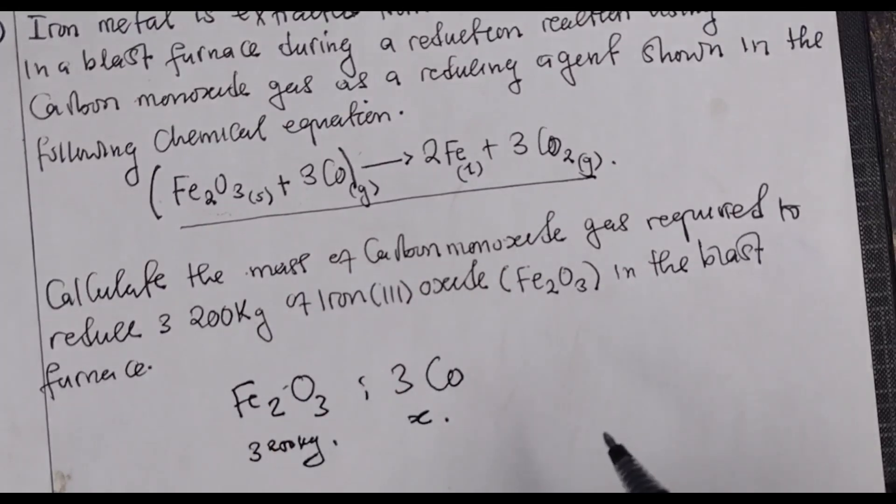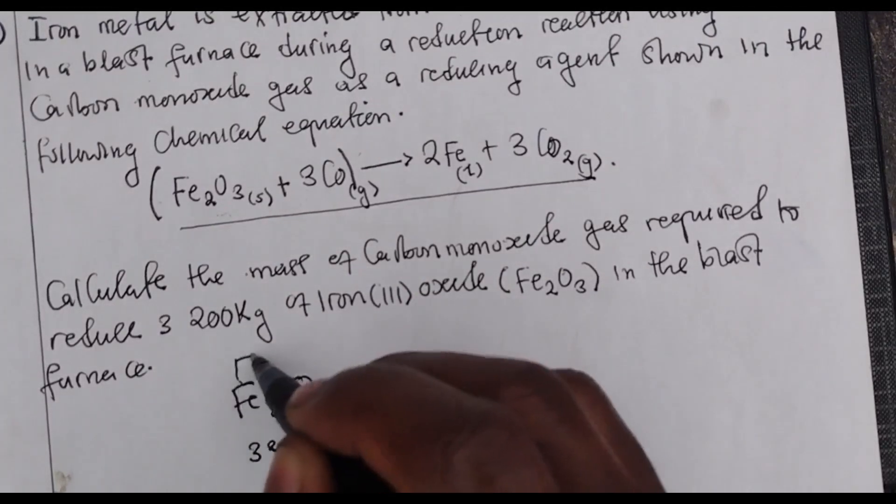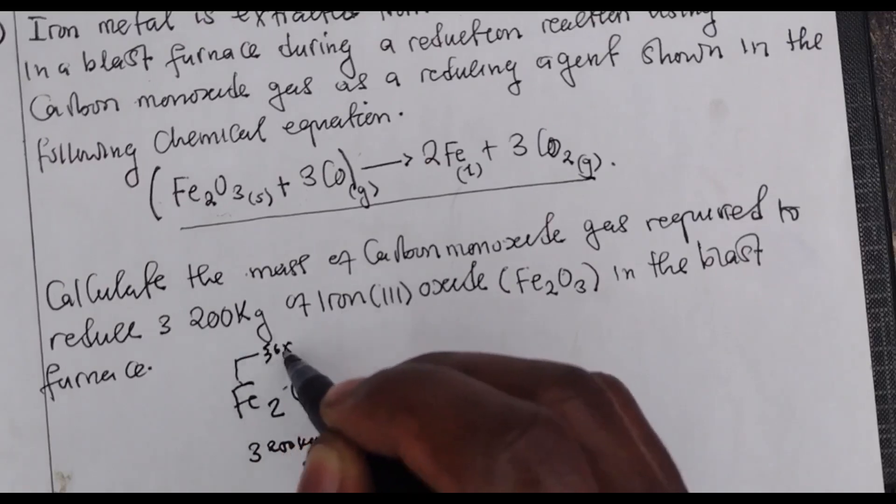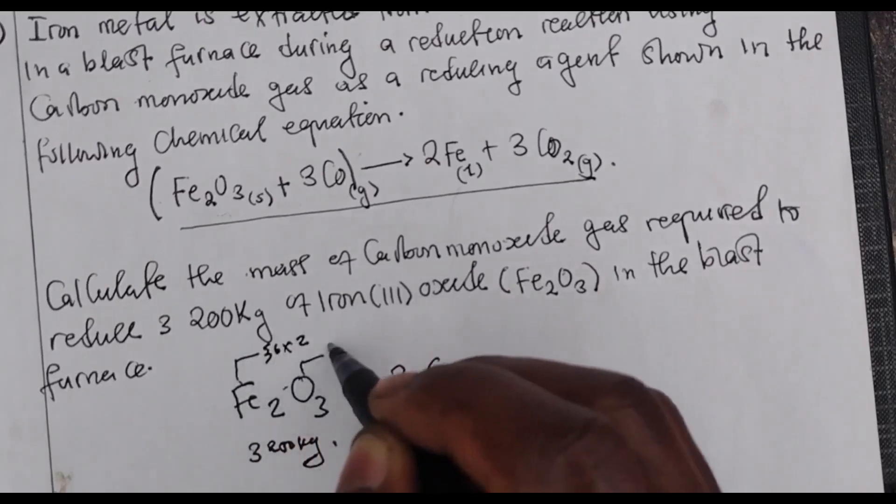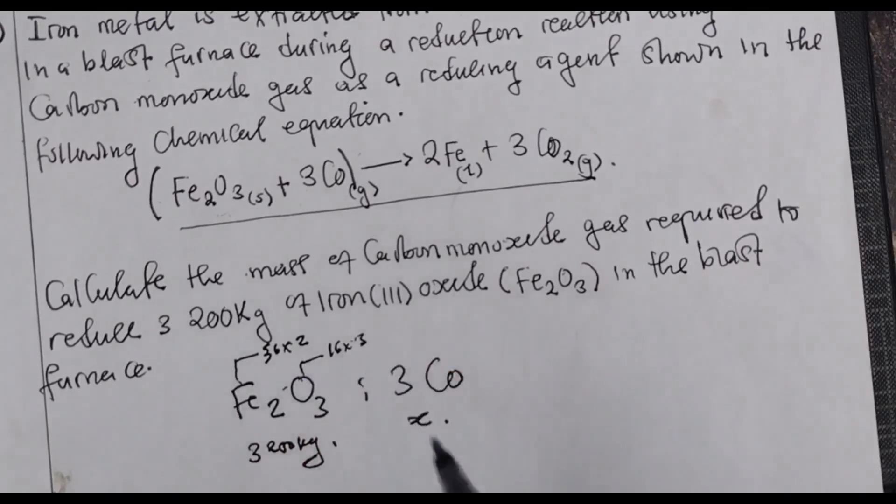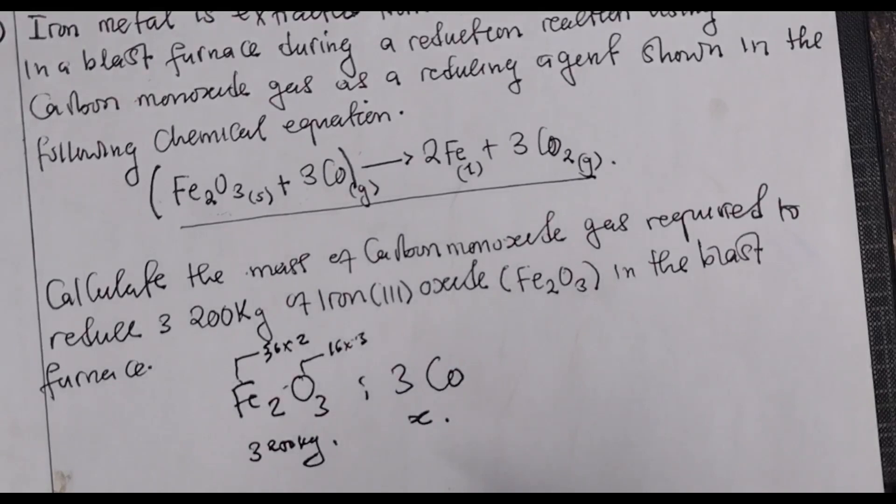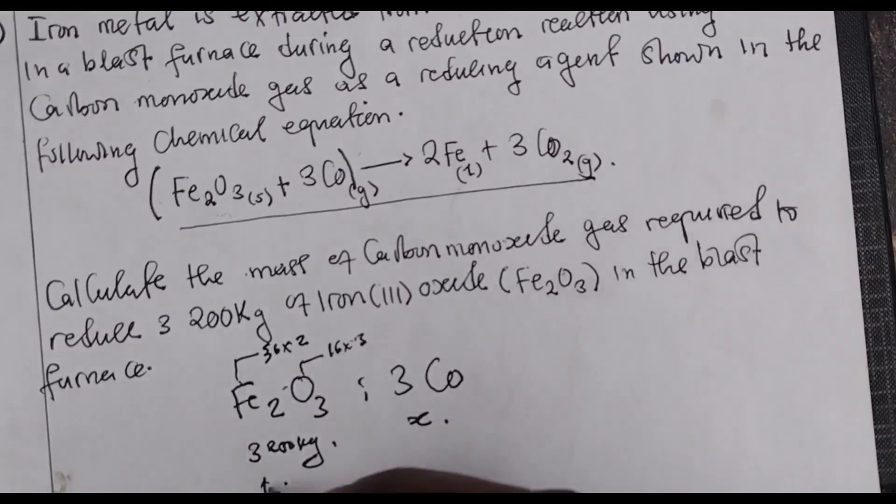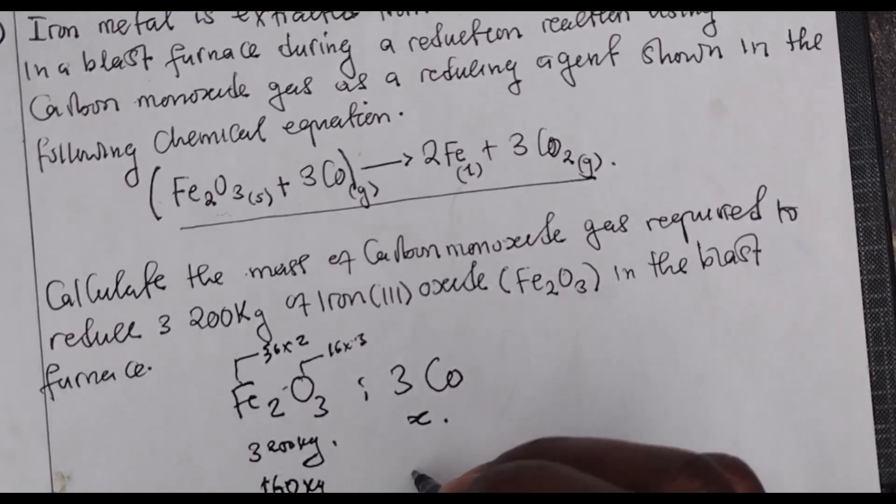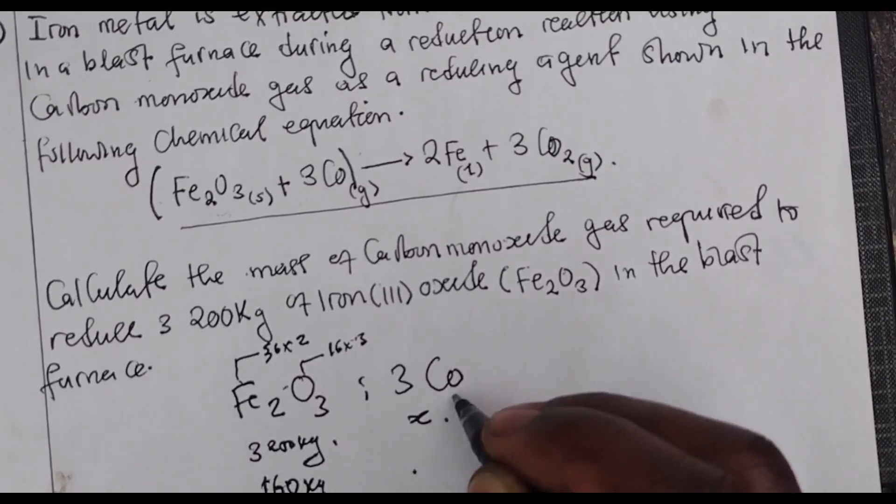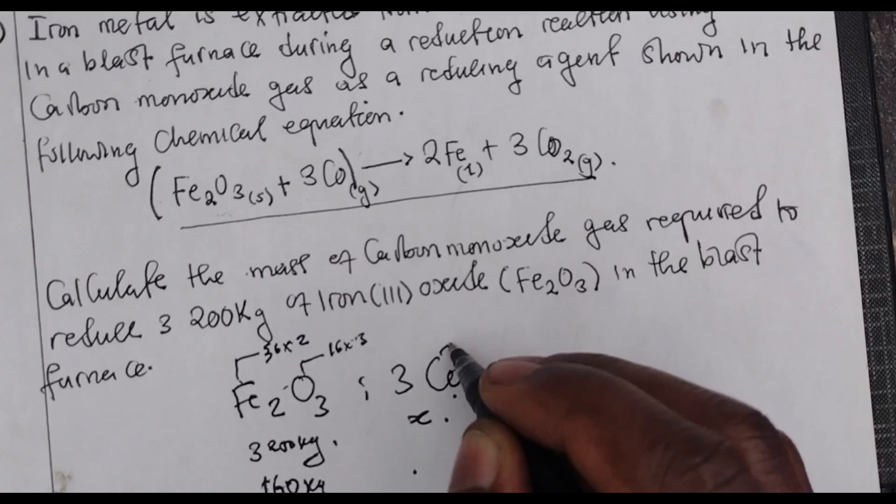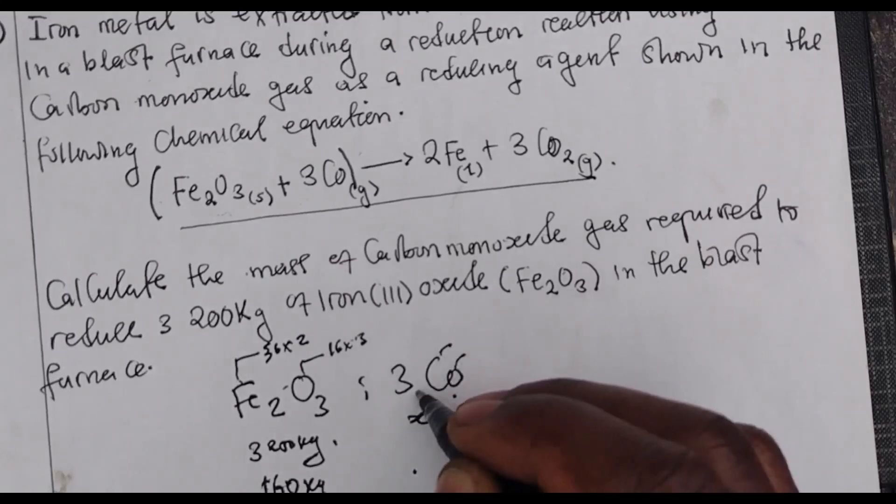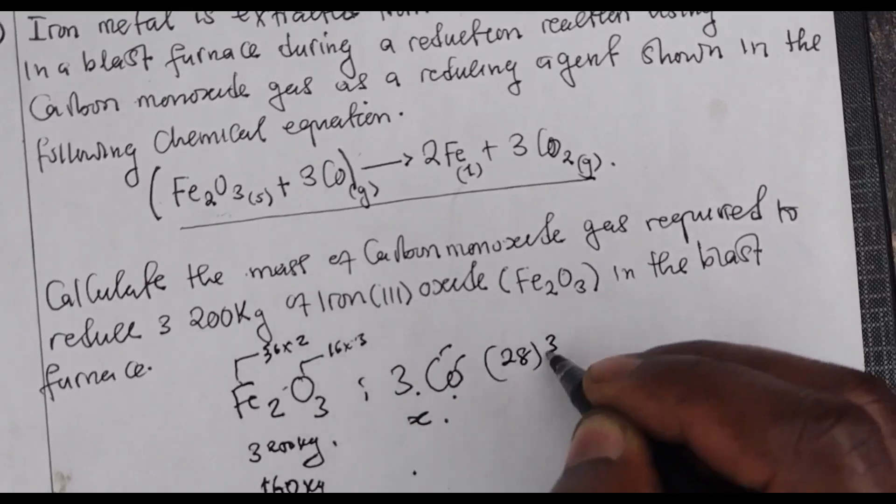Finding the molar mass of iron oxide: iron is 56, one iron is 56 multiplied by two of them, then oxygen 16 multiplied by three of them. So the molar mass of iron(III) oxide or hematite is 160. Then here the molar mass of carbon monoxide: carbon is 12, oxygen is 16, that's 28. Now there are three, so it will be 28 times 3, giving us 84.